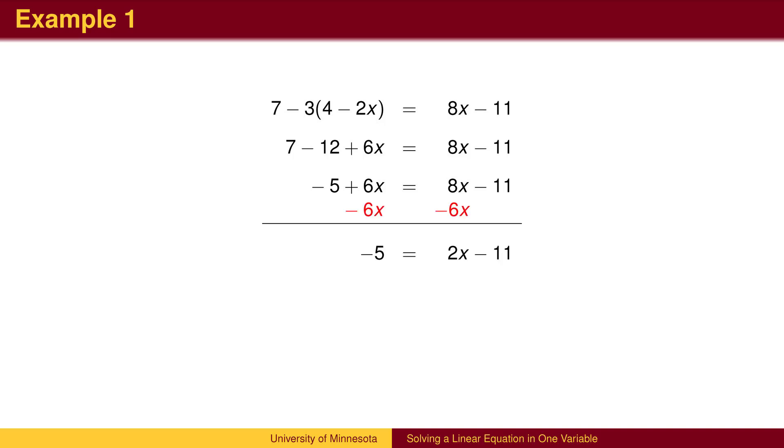We can now eliminate one of the variable terms by subtracting the same quantity from both sides. In this case, we subtract 6x from both sides, though it would work equally well to subtract 8x on both sides to get the variable in the left-hand side of the equation.